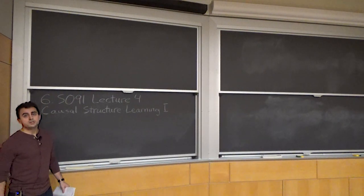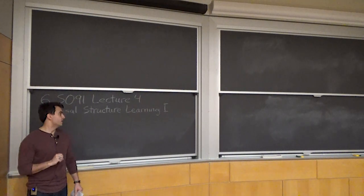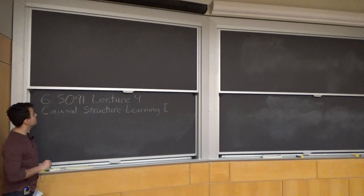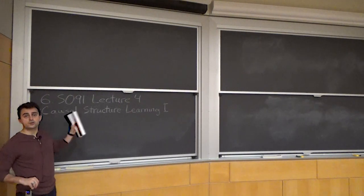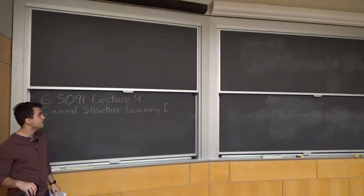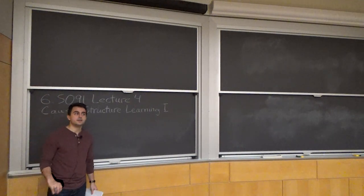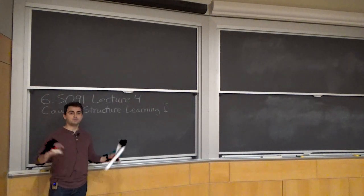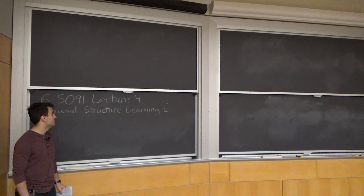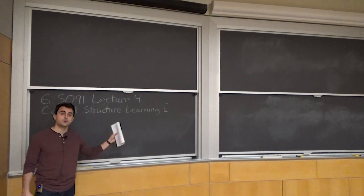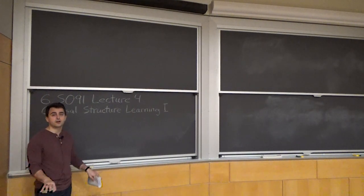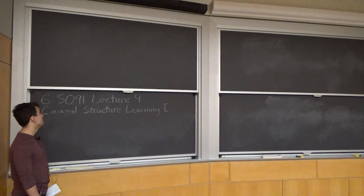Welcome to lecture four of our IEP class on causality. This lecture will start our first out of three lectures on causal structure learning. For those following along online, I'm giving today's lecture in front of an empty lecture hall due to technical difficulties with in-person recordings for lectures three and four. Hopefully those are resolved now and we can get back on track for lectures five through eight.